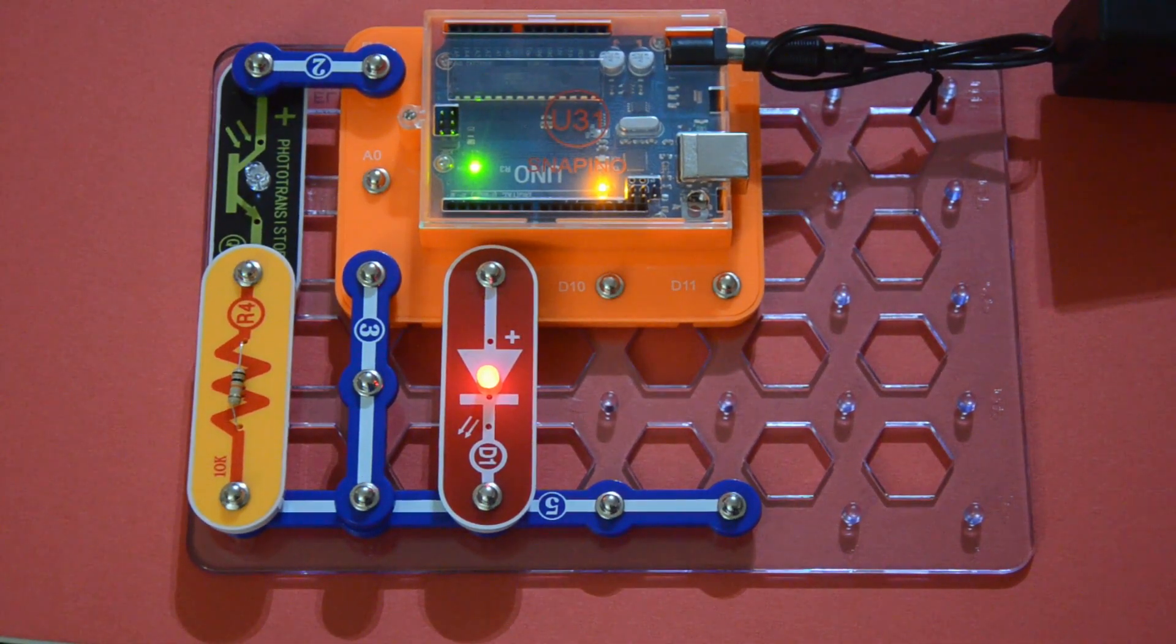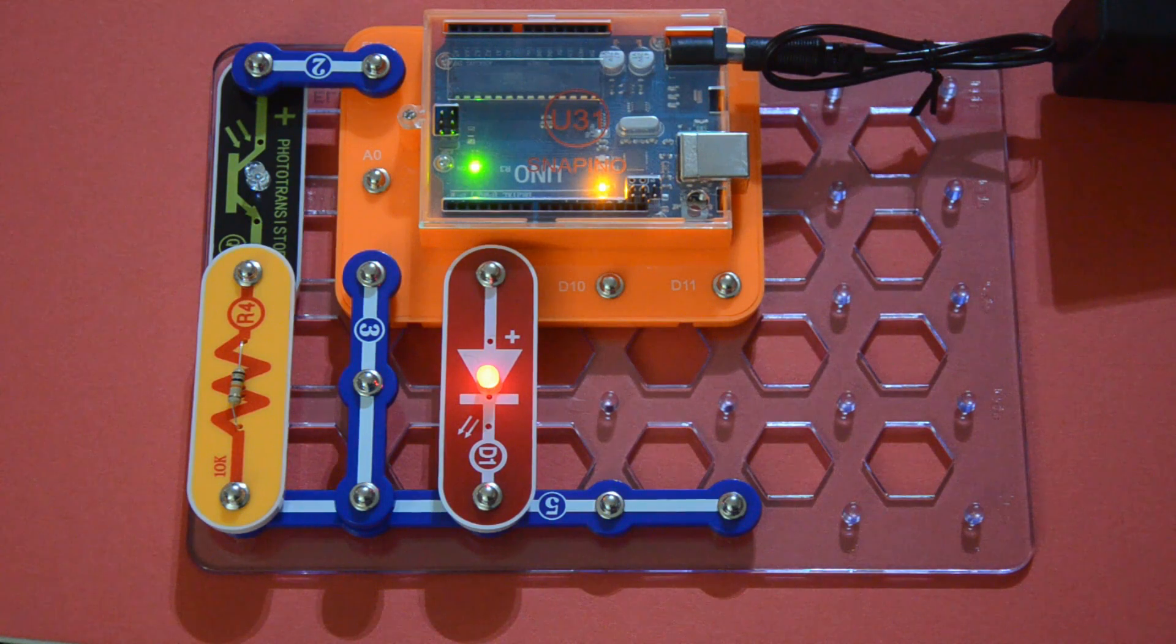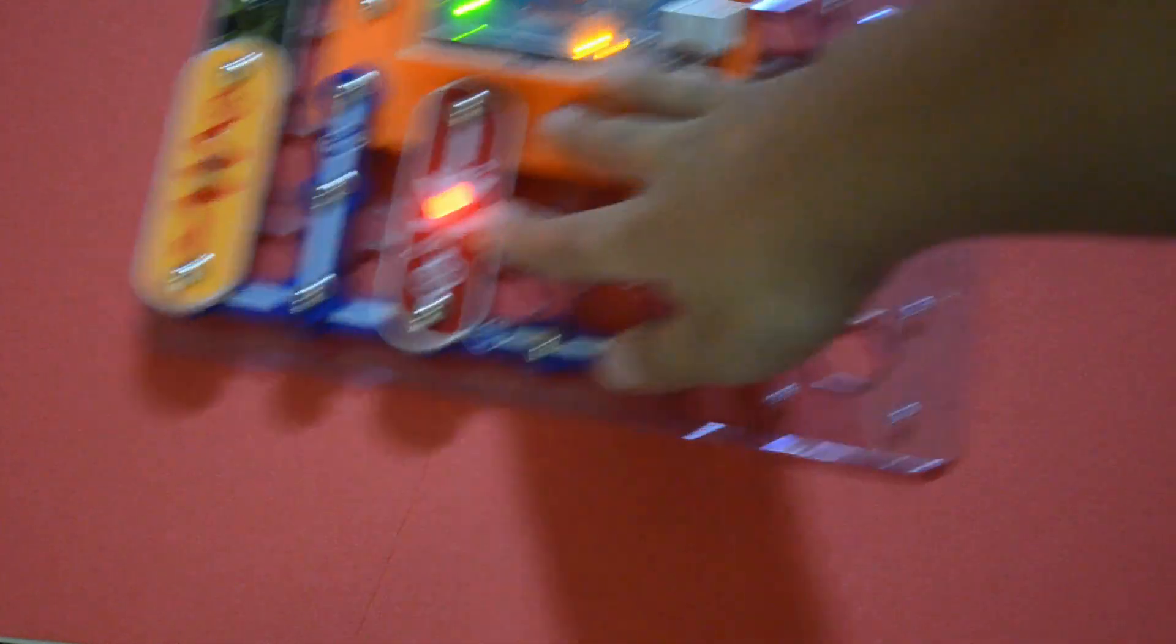Now you see the LED's on because the photo transistor senses it's dark. But if I put it away from there... If I put it away, yeah, it's off.